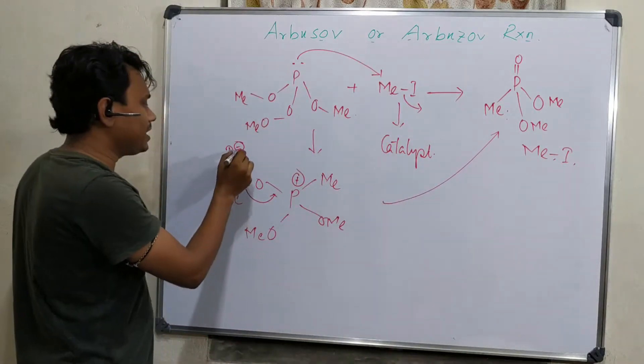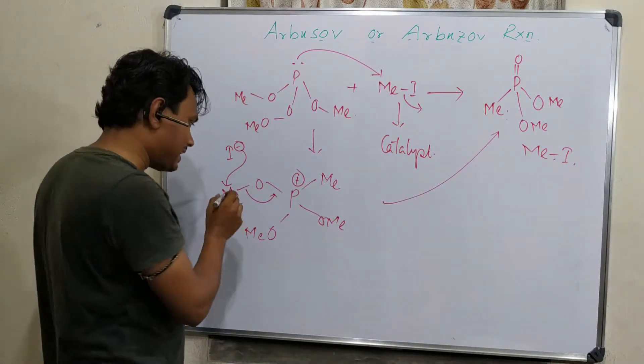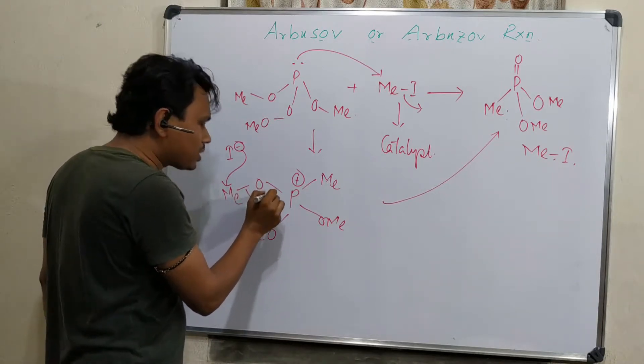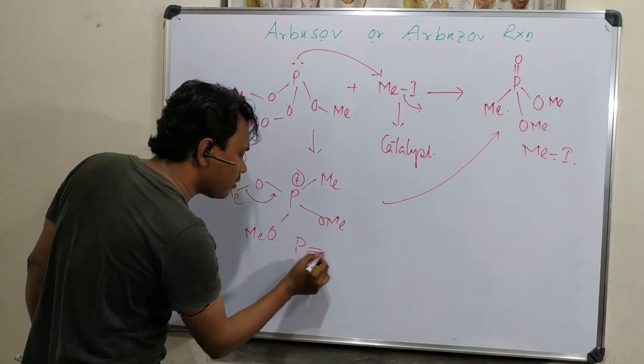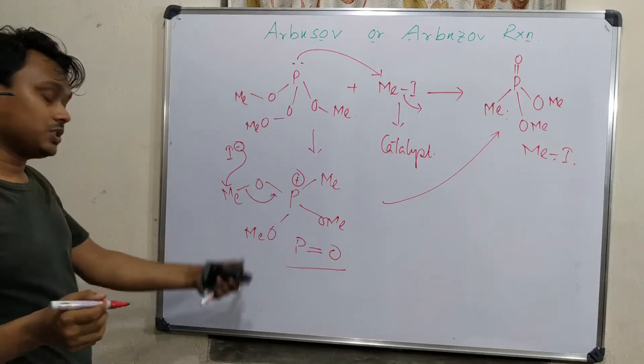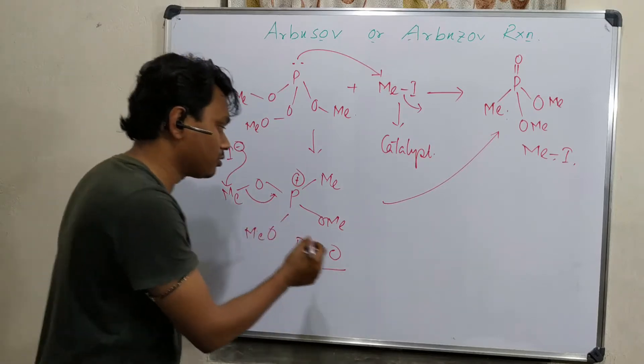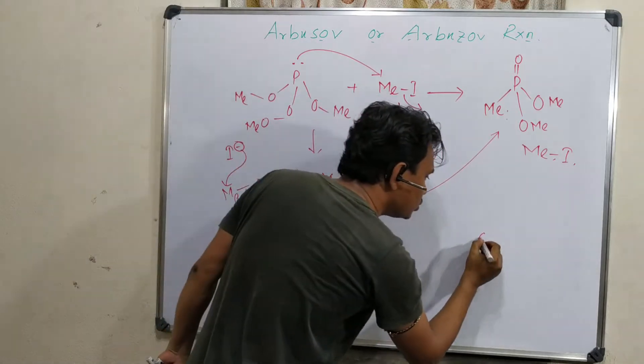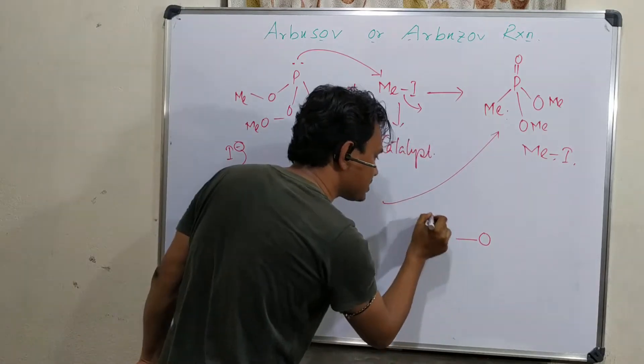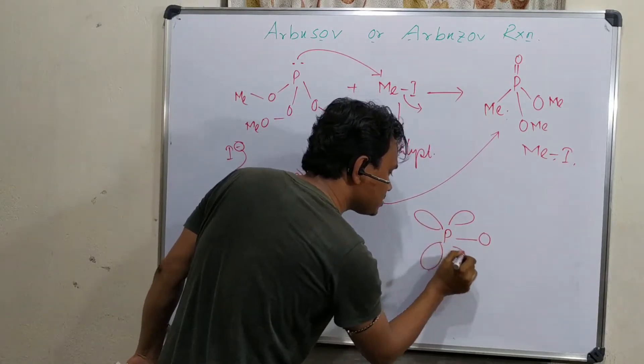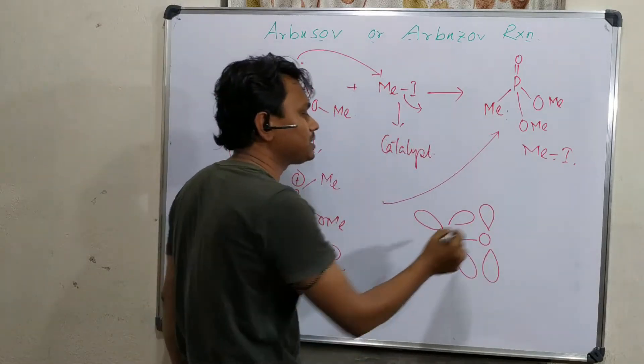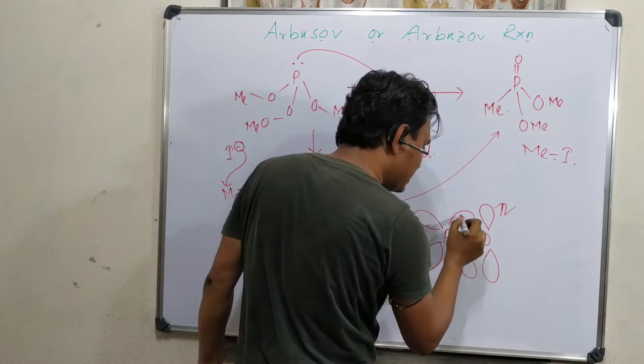How? Because iodide is a good nucleophile, it will attack. Secondly, here you can see this P-O double bond is forming. We know that phosphorus-oxygen multiple bonds are stable and phosphorus prefers to form bonds with oxygen because of 2pπ-dπ bonding. Phosphorus has energetically accessible vacant d orbitals and oxygen has filled p orbitals.